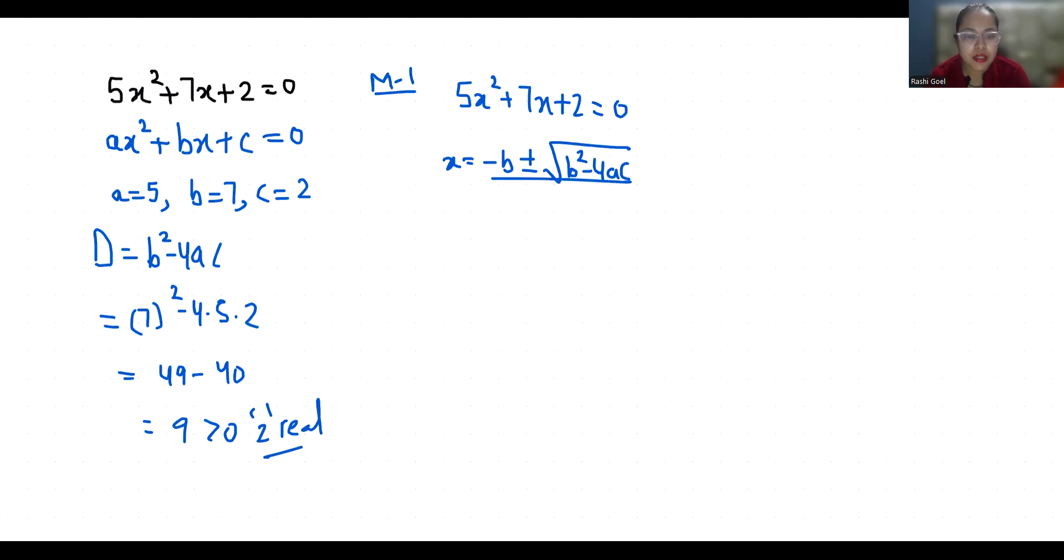So -7 ± √(b² - 4ac), we already calculated that is 9, by 2 × 5. So x₁ is -7 + √9, we can write it as -7 + 3 by 10, and x₂ is -7 - 3 by 10.